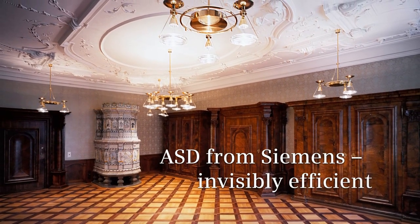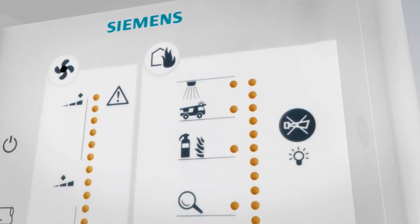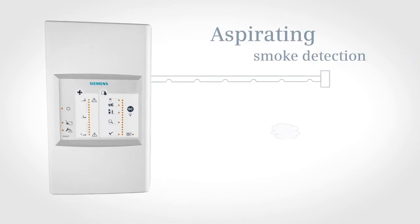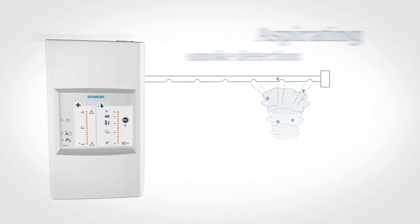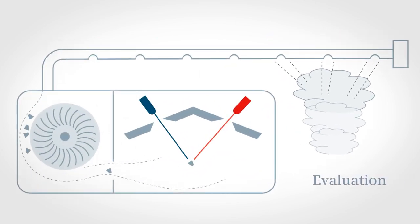Introducing the new aspirating smoke detectors from Siemens that measure and classify airborne particles for early reliable fire detection. Aspirating smoke detectors continuously draw samples of air from the areas requiring protection and evaluate these samples for the presence of smoke.